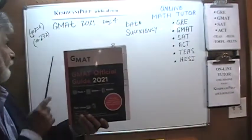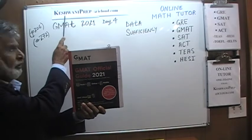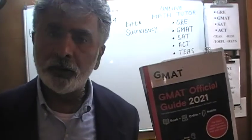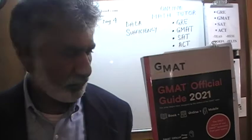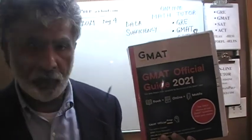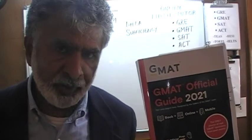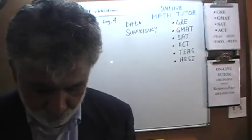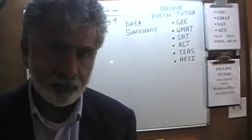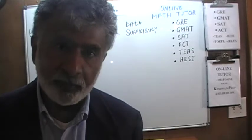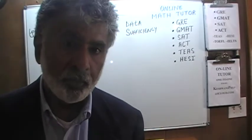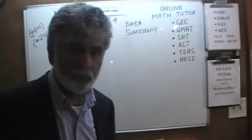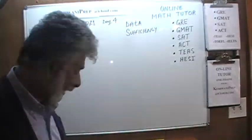Hello, my name is Keshwani — that's K-E-S-H-W-A-N-I. We are here to prepare for the GMAT. We have been solving math problems out of this book, the Official Guide to GMAT 2021. If you do not own this book already, purchase one immediately. Yesterday we did multiple choice problems, the day before we did data sufficiency problems on pages 204 and 205. Today we're going to pick up from page 206, starting with problem number 272.